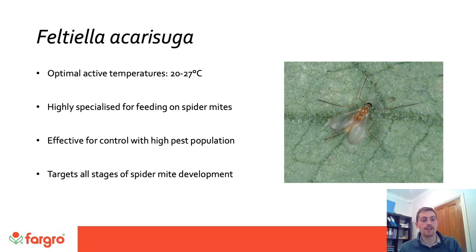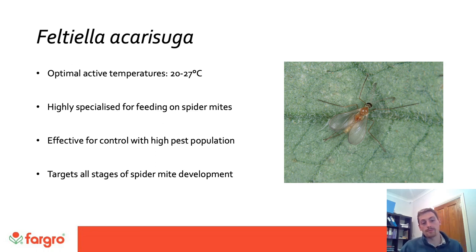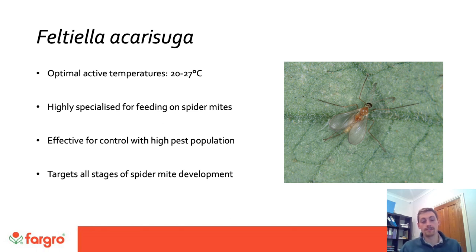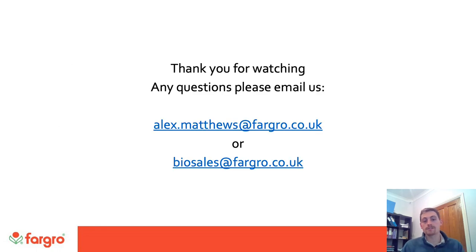Finally, Feltiella is a gall midge that is very specialized for feeding on spider mites. Optimum activity is between 20 to 27 degrees. It's effective when you've got a high pest population, and it's very mobile in the crop — especially during the winged stage where it can travel and seek out populations of spider mites. It targets all stages of spider mite development, making it a really effective predator for targeting spider mites.